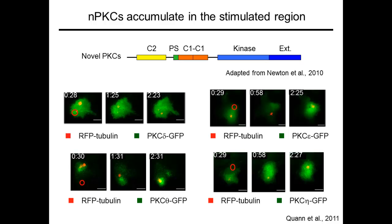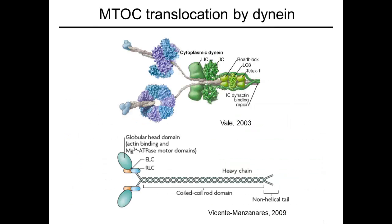Using siRNA knockdown, we went on to show that all three of these enzymes are involved in the polarization pathway, and that PKC epsilon and PKC eta function upstream of PKC theta in this context. Interestingly, PKC delta, the fourth novel PKC isoform, does not appear to participate in this response.